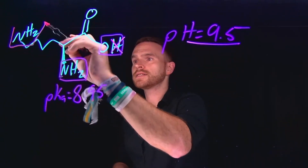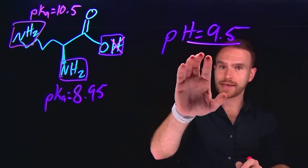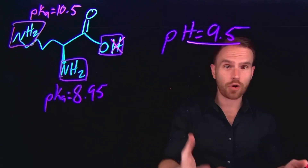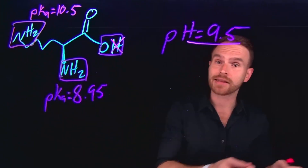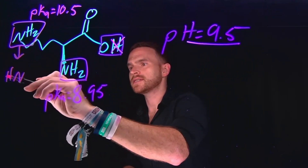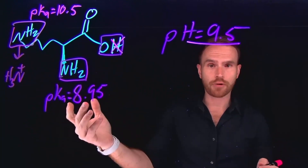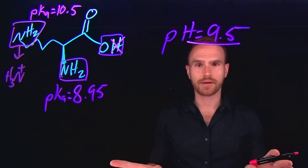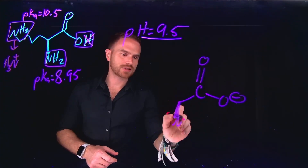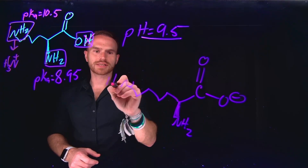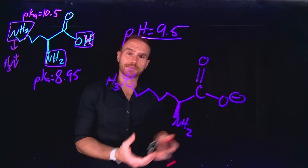For the amine side chain, the pKa of this aliphatic amine is actually around 10.5. Since the pH of 9.5 is lower than this pKa, the amine is in a more acidic environment than its pKa, meaning it will exist in its protonated form. So we would expect just this side chain amine to be protonated, the carboxylic acid group to be deprotonated, and the alpha-amine to exist as the neutral amine. We can redraw this structure to reflect what it looks like at this pH: the side chain amine is fully protonated, the amine at the alpha carbon is not protonated, and the carboxylic acid functional group has been deprotonated.